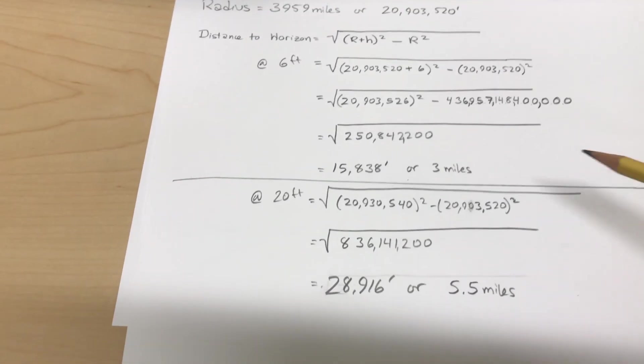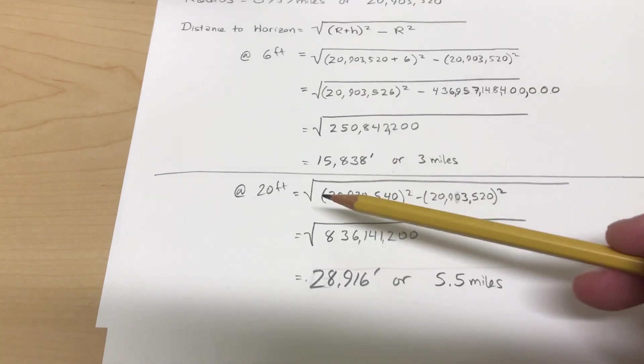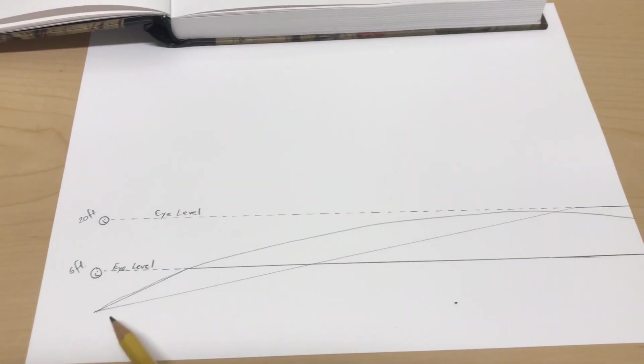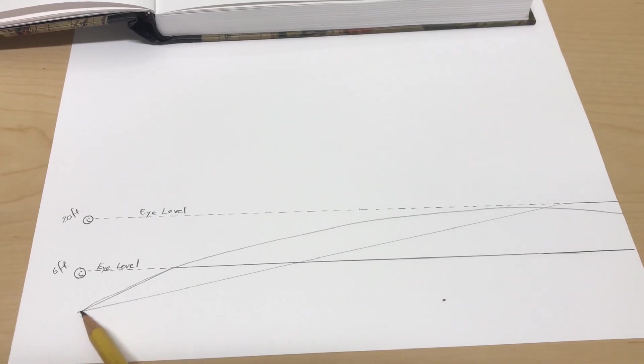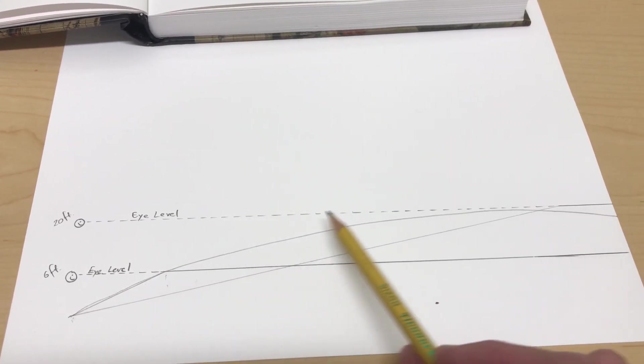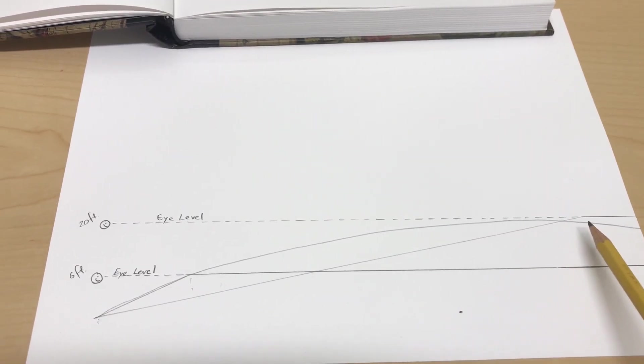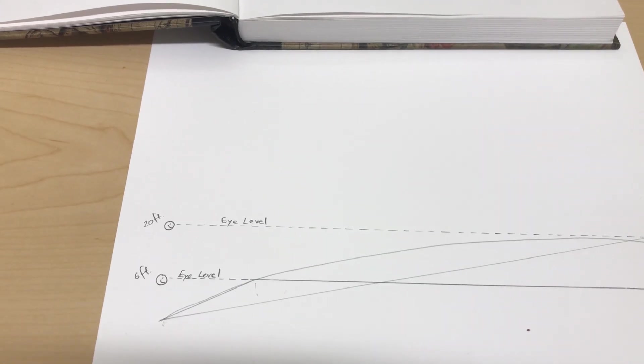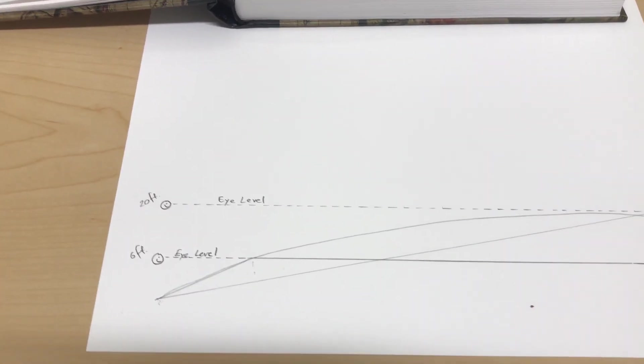So we can see 2.5 miles farther at 20 feet, which is why the endpoint underneath where you're standing at sea level, the horizon, and the horizon become the endpoints by which we connect an arc. And that's all there is to it. Simple as that.